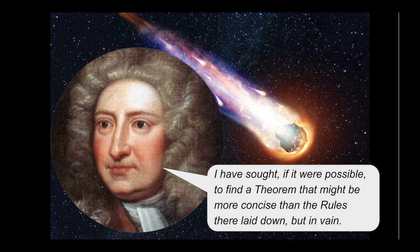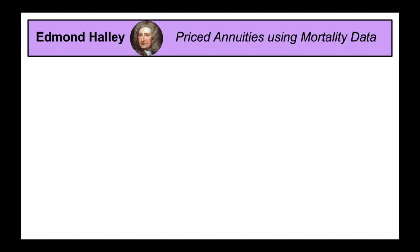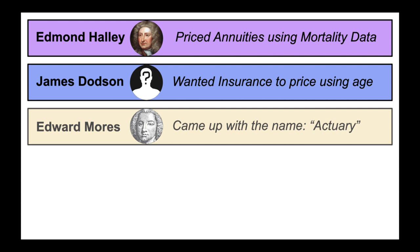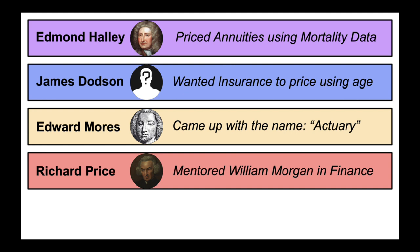A quick summary of the story so far: Edmund Halley is pricing annuities using mortality data. James Dodson wanted to form an insurance company based on actuarial science. Edmund Moors said we need an actuary to do the calculations — he came up with the name 'actuary.' Then Richard Price does the calculations and mentors a young William Morgan, who would go on to become the father of actuarial science.